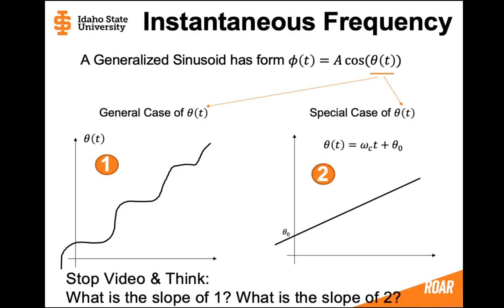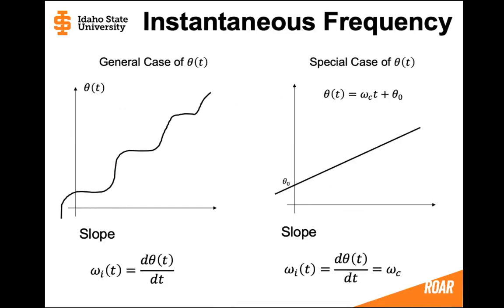Now stop the video and think for a moment. What is the slope of graph 1 and what is the slope of graph 2? Well the slope of graph 1 is going to be a derivative and so is the slope of graph 2. But on graph 1 that derivative of the angle is going to be changing at every single moment. So every single moment on graph 1 we're going to have a slightly different instantaneous frequency.